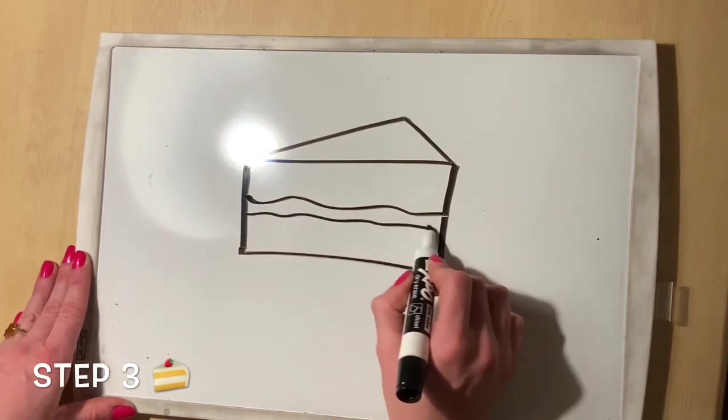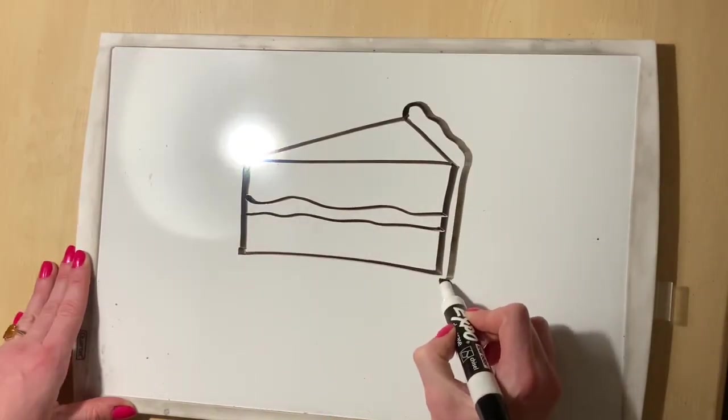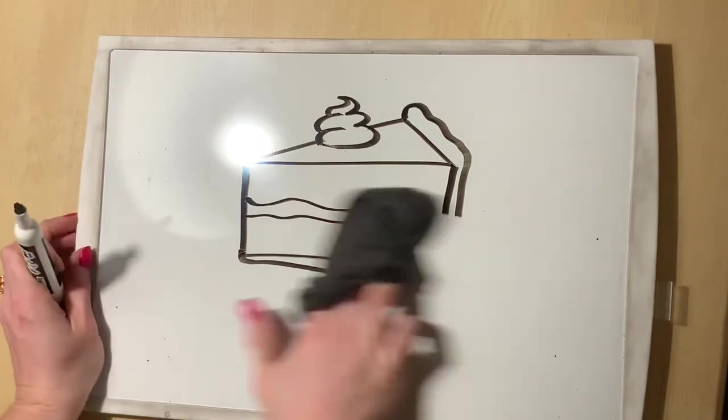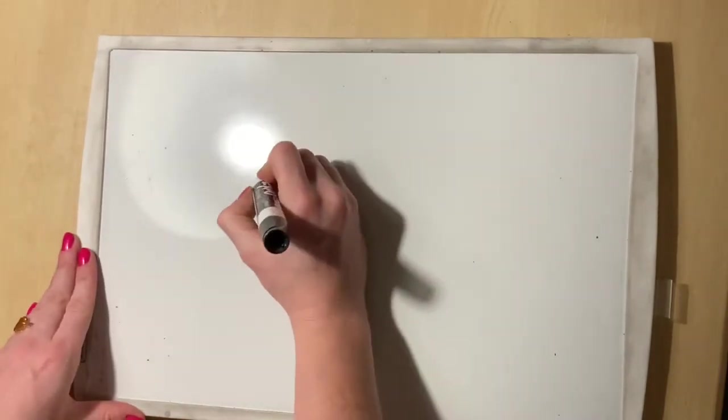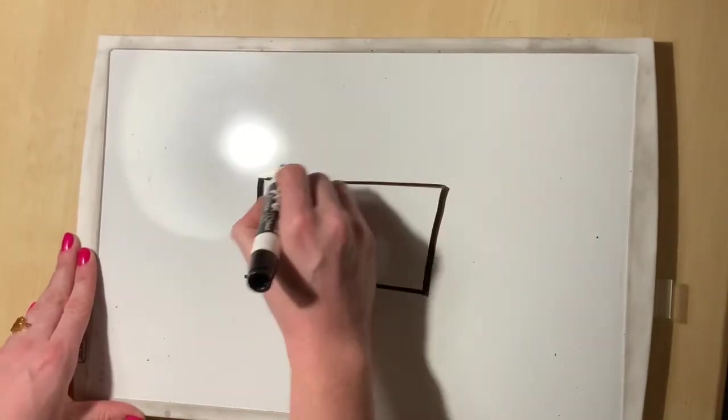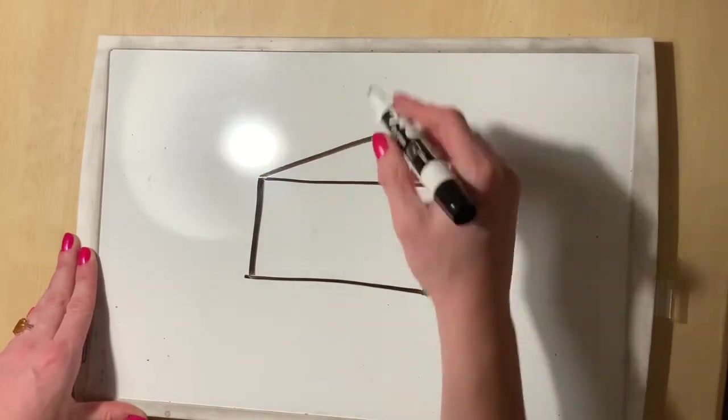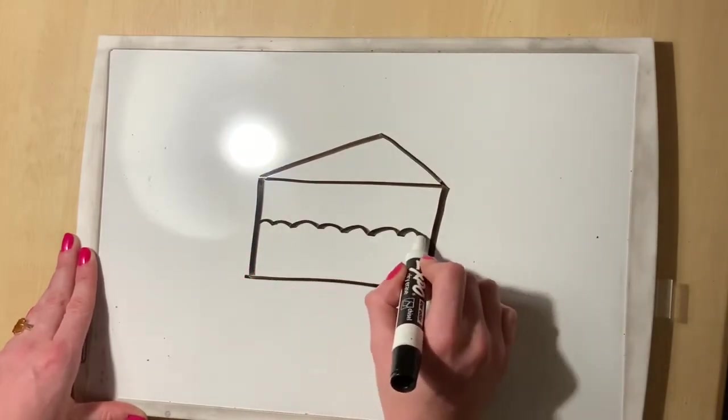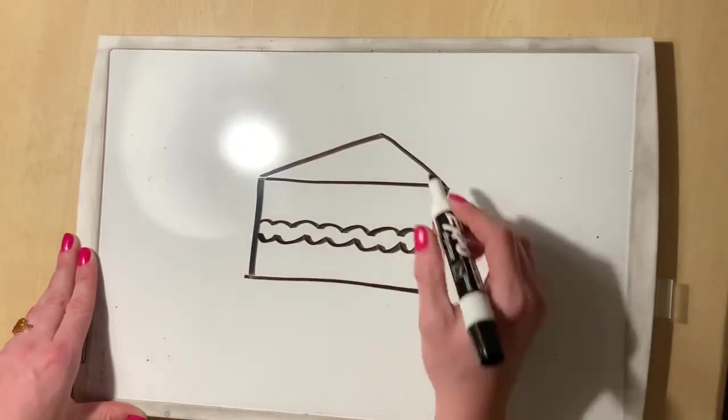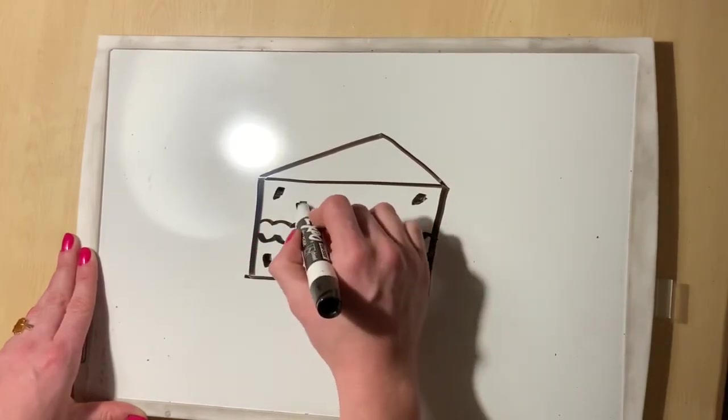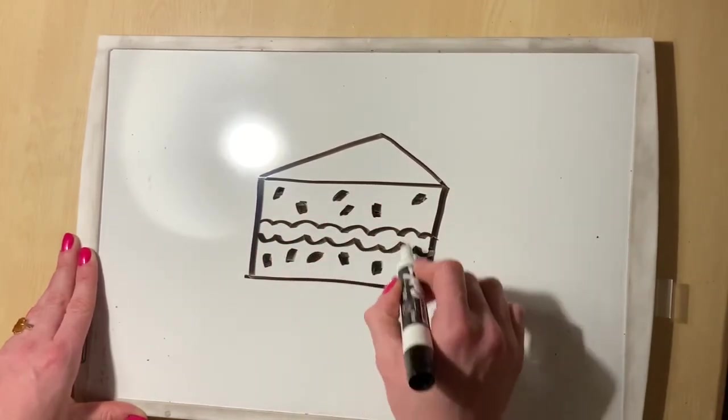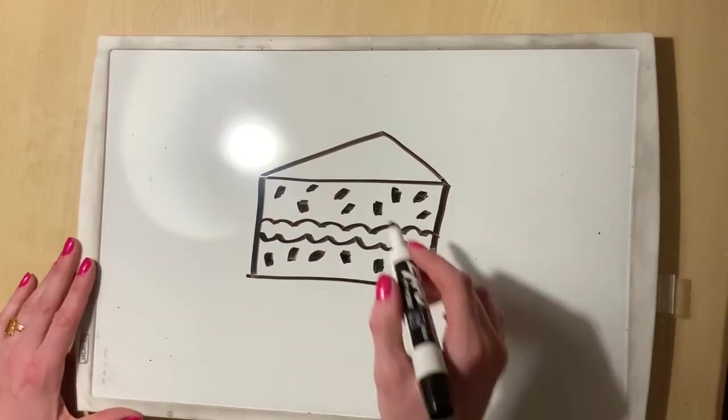There are like a million different things you can add to your triangular prism to make it look more like a pie. You can add a crust, you can add a little swirl of whipped cream on top. You can add chocolate chips inside. I mean, make it delicious, guys.